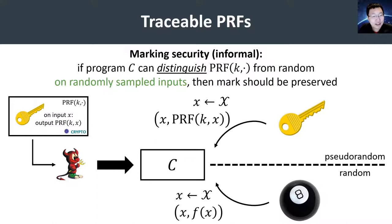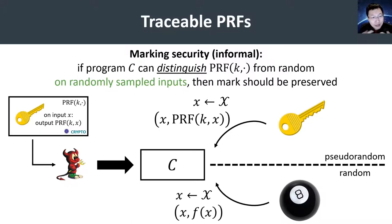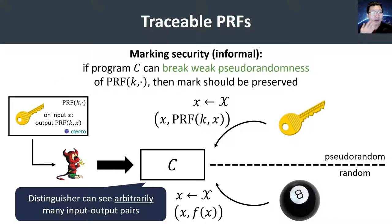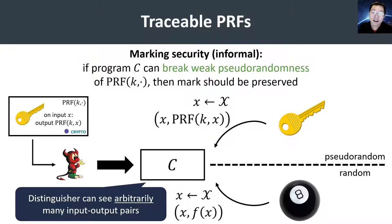In order to make this definition meaningful and useful, we relax the security requirement and say that the adversary has to produce a circuit C that contains some global structure about the PRF behavior. Namely, the circuit C should be able to distinguish the pseudorandom function given only random evaluations of the PRF on random points in the domain. In other words, we require that the distinguisher not only break strong pseudorandomness, but even break weak pseudorandomness — the adversary must produce a circuit containing information about the outputs of the PRF on a large fraction of the domain.